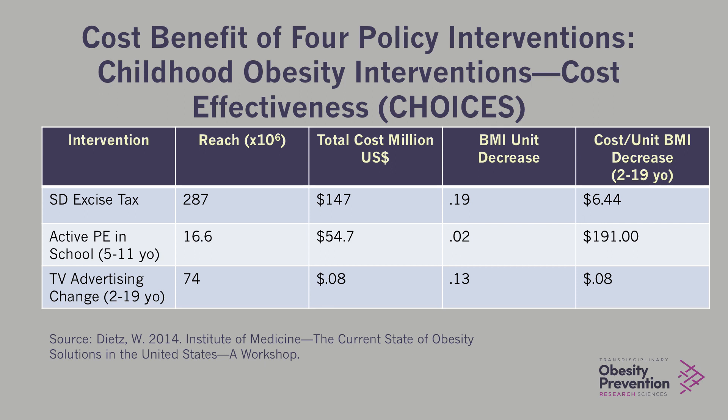These are also some examples in terms of where to focus our efforts with respect to cost-effectiveness benefits of specific interventions. For example, finding that if we were to focus on television advertising and reduce that, it would cost us eight cents per unit decrease in BMI. Doing things like having a soda tax on sugar-sweetened beverages are just some examples of where we can implement environmental policies — giving us a sense of the bang for our buck and how cost-effective these policies are.